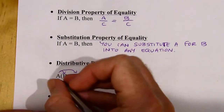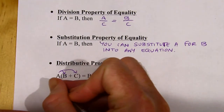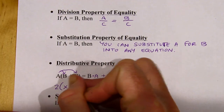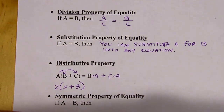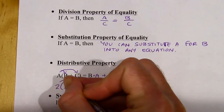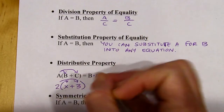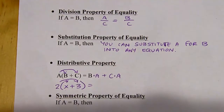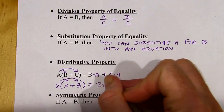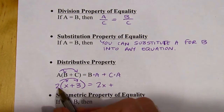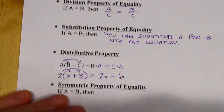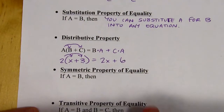That'll come in handy a lot of times when we've got something like 2 times the quantity X plus 3. I can't simplify inside the parentheses, but I can rewrite this without parentheses, which is considered simpler. Two times X gives 2X, and two times three would be six. So I just used the distributive property.